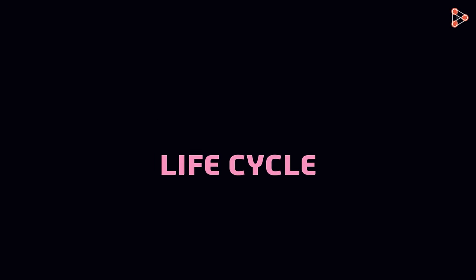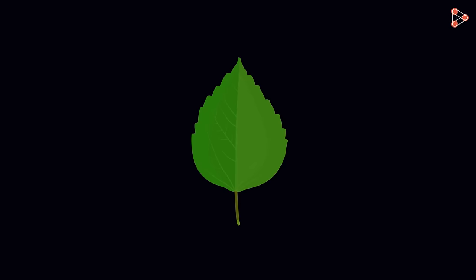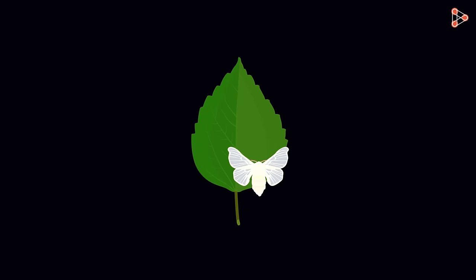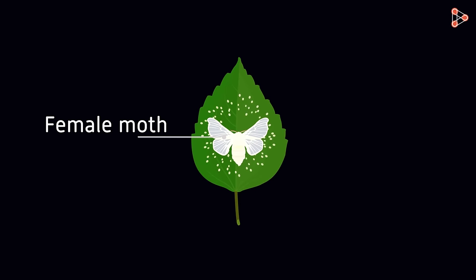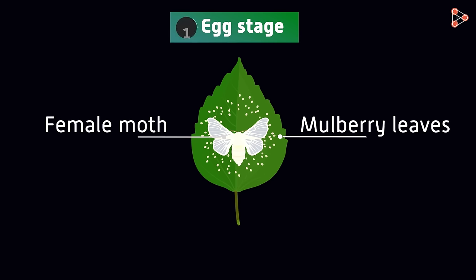To begin with, the first stage is where the eggs are laid by the female moth on leaves. Which plant leaves are preferred by the moths? It is the leaves of plants like mulberry which are preferred. So the egg stage is the first stage.